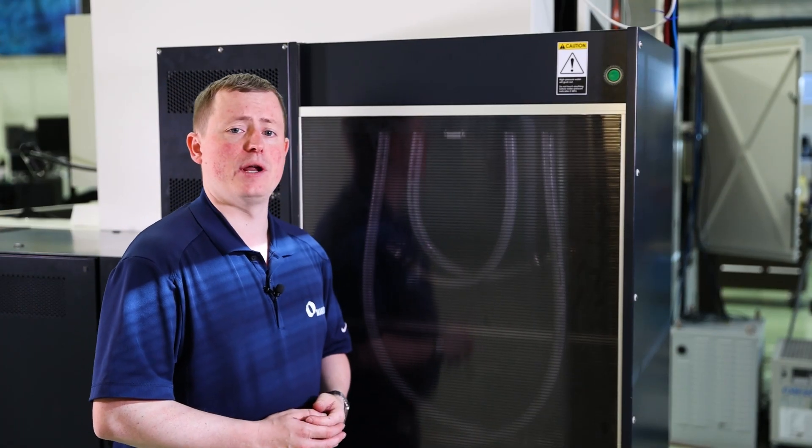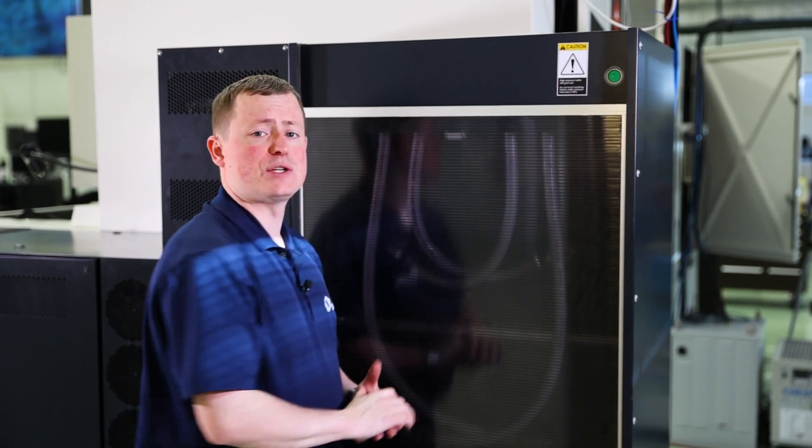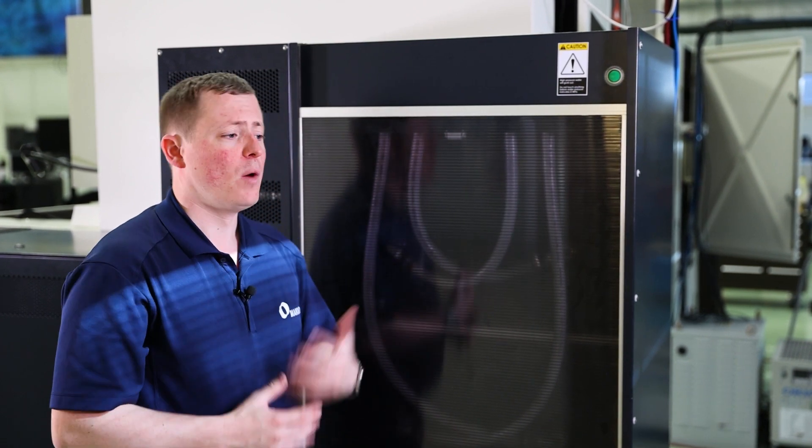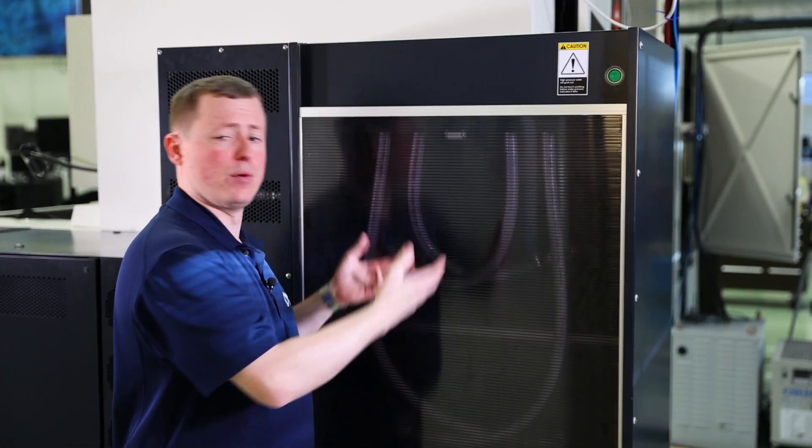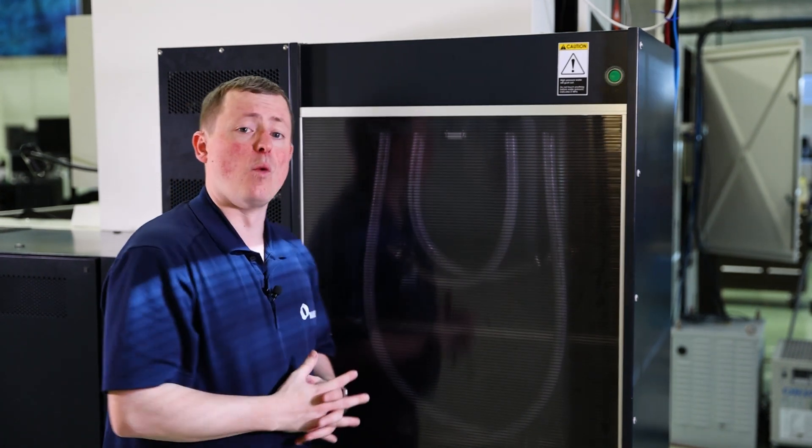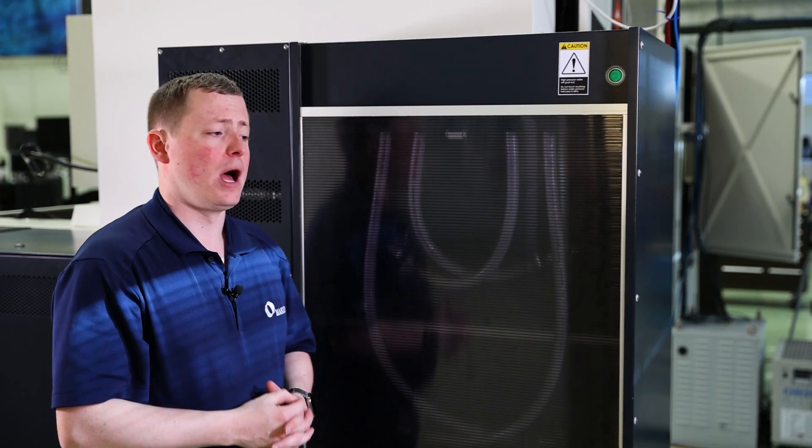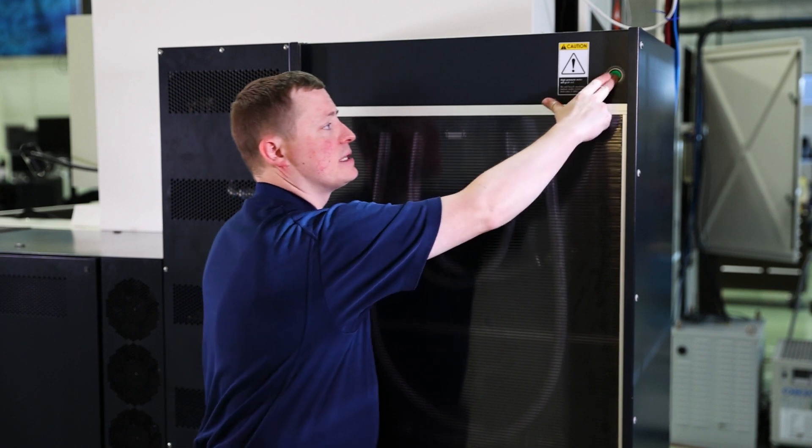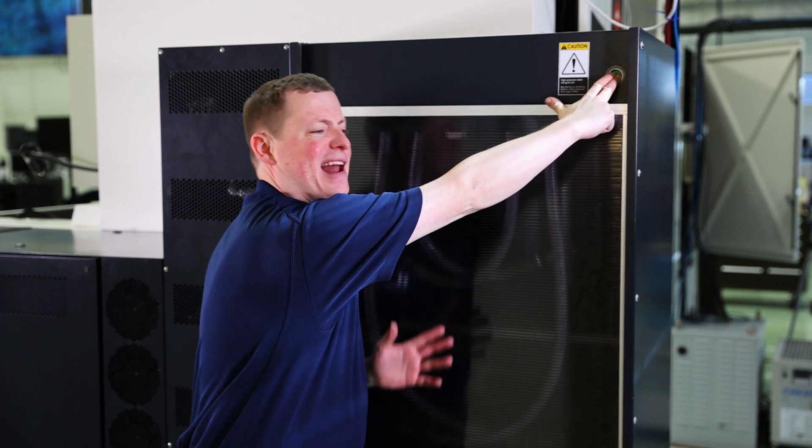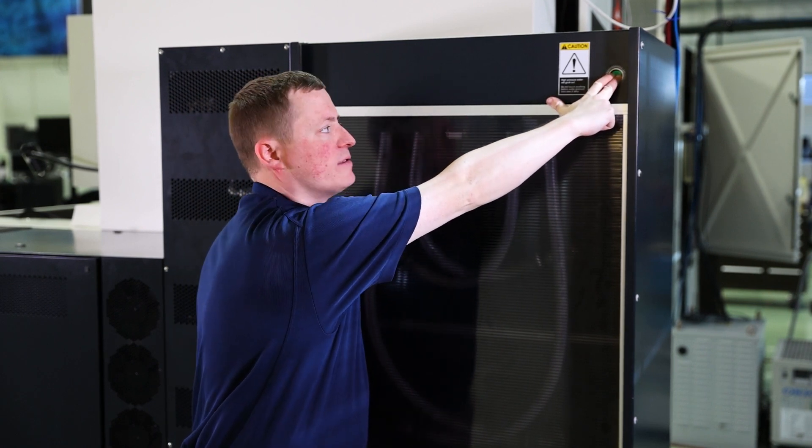Next step, once you get back here, what you're going to do, we have a green button here. So this is our air purge button. What this will do is blow air through the lines and blow all the water out of the filters. So you're going to press and hold this for about a minute and a half or so once the filters are full.